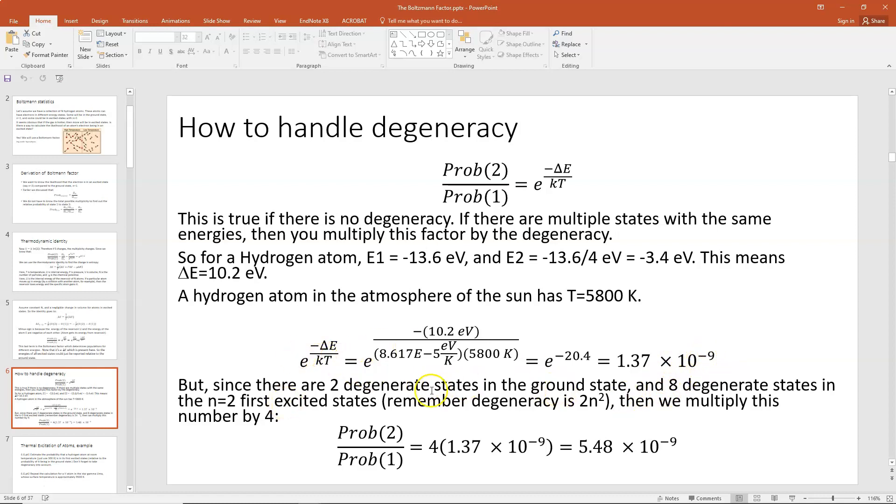But there's two degenerate states in the ground state and eight degenerate states in the n=2 first excited state. So for each state there, you therefore multiply by the degeneracy of the state. Since you're doing probability 2 over probability 1, you would multiply by 8 for 2 divided by 2 for 1. And that means you multiply by a factor of 4 out front. So it would be 4 times 1.37 times 10^-9, and that would give you a probability of 5.48 times 10^-9. So that means that instead of one in every billion atoms, you've actually got five or six in every billion atoms that are in the first excited state.